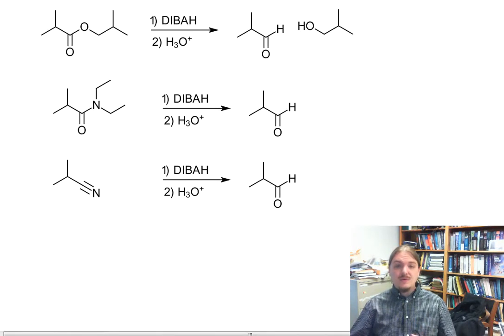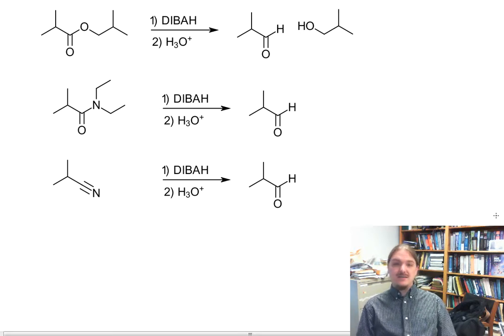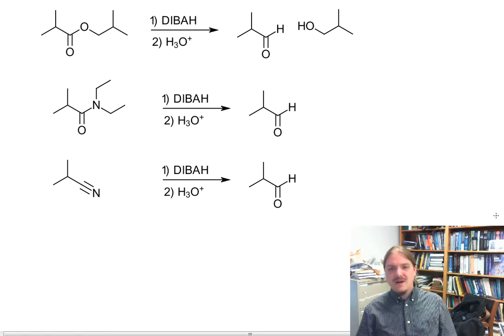Then diisobutylaluminum hydride reduces esters, amides, and nitriles. Since it's an electrophilic reducing agent, it can reduce these less reactive carboxylic acid derivatives because they are better nucleophiles than aldehydes and ketones. And because they tend to form an intermediate that does not immediately decompose and requires aqueous workup in order to form the aldehyde.